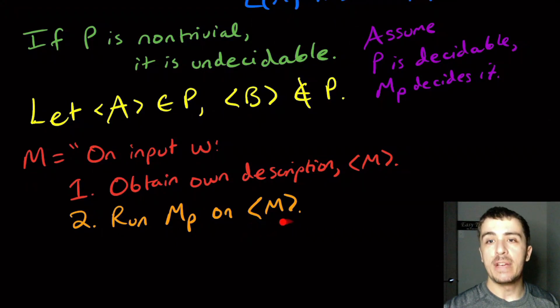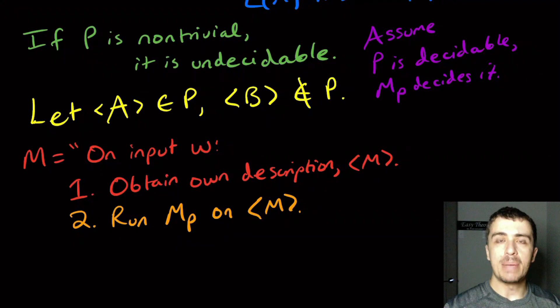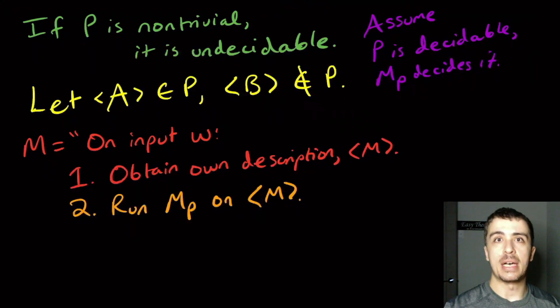Because this MP machine always halts, it's a decider, that implies it always accepts or rejects in a finite amount of time no matter what. Let's figure out which is the case.